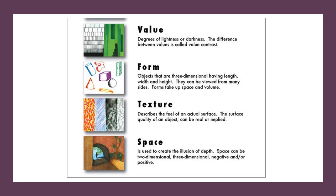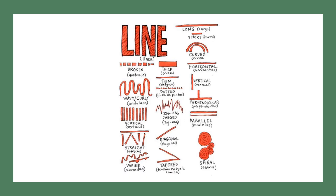So add the art elements. To make an etching artwork, you are mostly going to use line. So practice different types of line: broken lines, thick, thin dotted lines, wavy, curly, vertical, straight, spiral, parallel, horizontal, vertical, long and curved lines. Quickly practice a few in your journal or sketch pad.